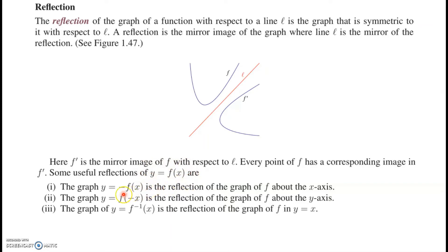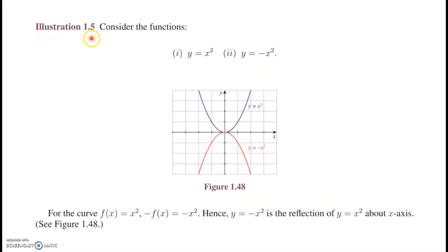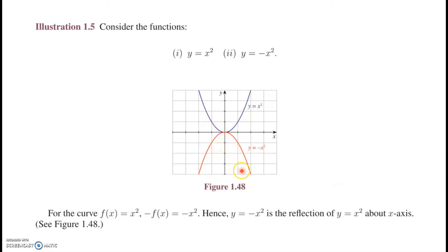So if y = f(x) is the original function, then y = −f(x), y = f(−x), and y = f⁻¹(x) are all reflections of the graph y = f(x). In Illustration 1.5, consider y = x² and y = −x². The blue graph is y = x² and the red graph is y = −x², which is clearly a reflection.